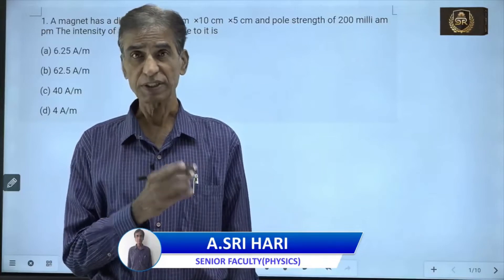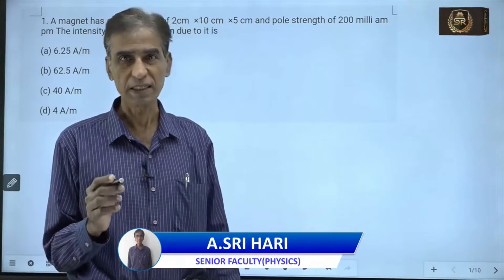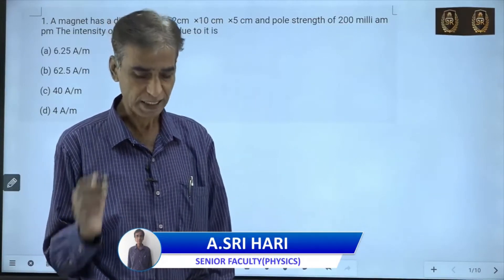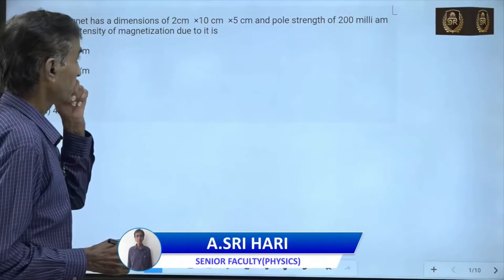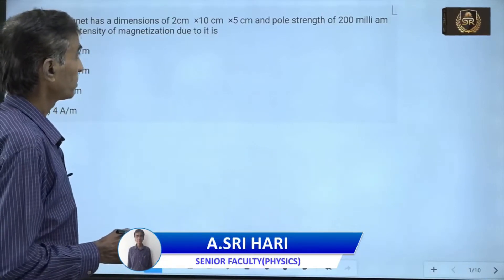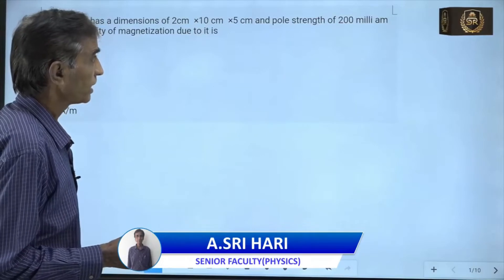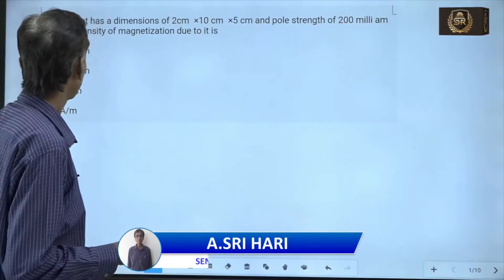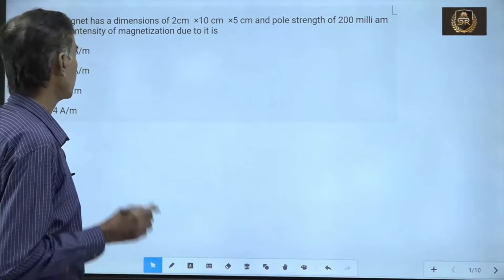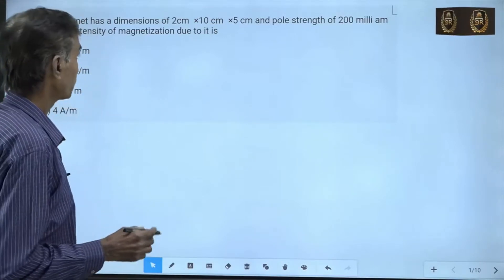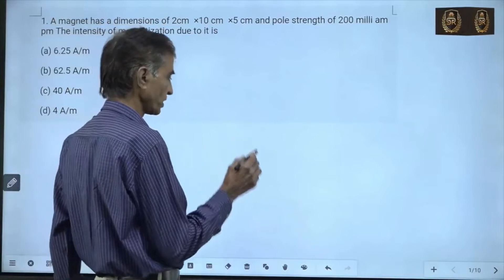So now let us take up the first problem, which is the first model we can expect in magnetic material — that is the properties of magnetic materials. A magnet has dimensions of 125 cm by 10 cm by 5 cm and a pole strength of 200 milliampere meters. The intensity of magnetization due to it is — please note, the first dimension is 125 cm, not 2 cm.